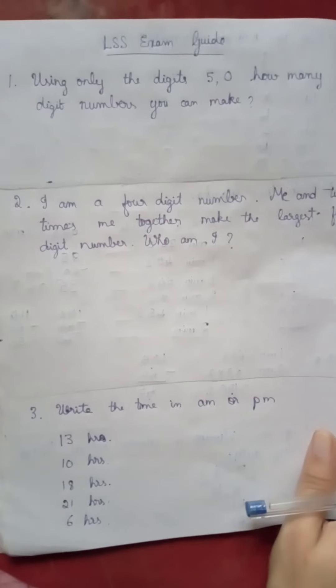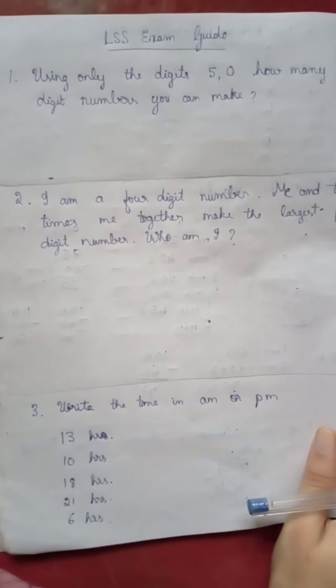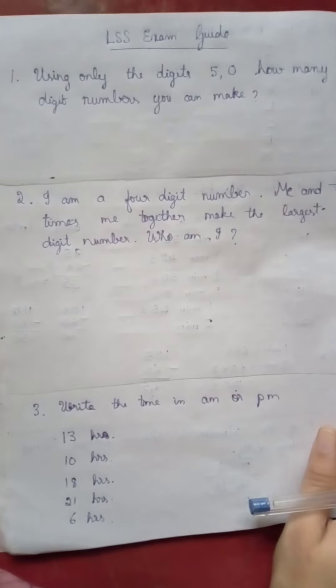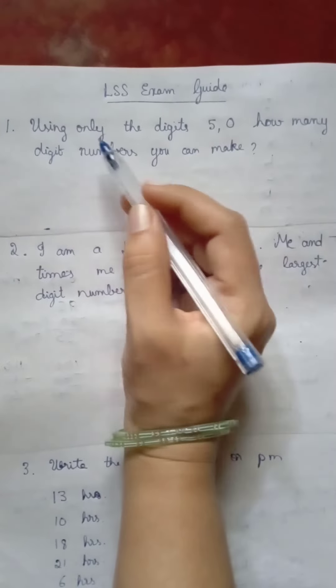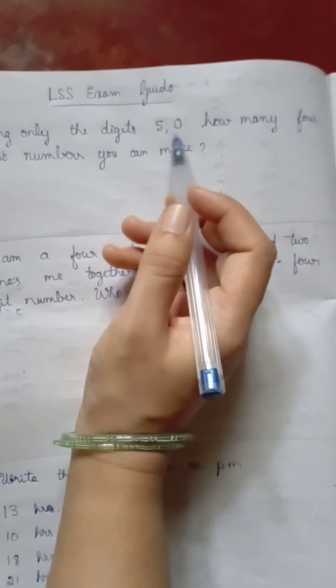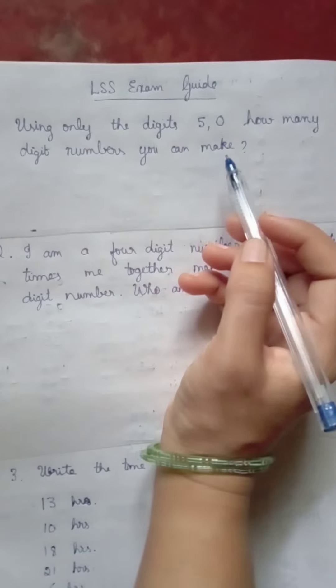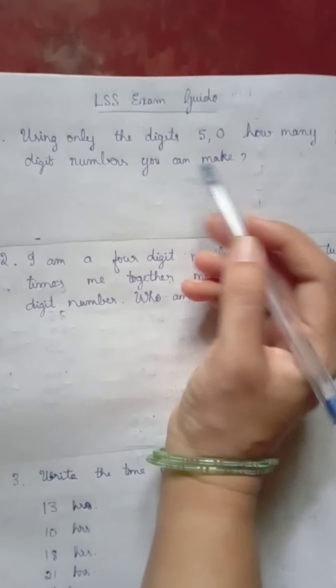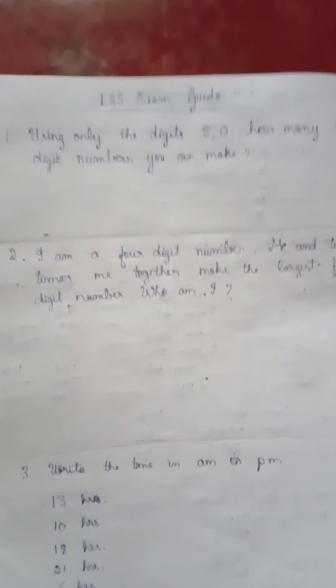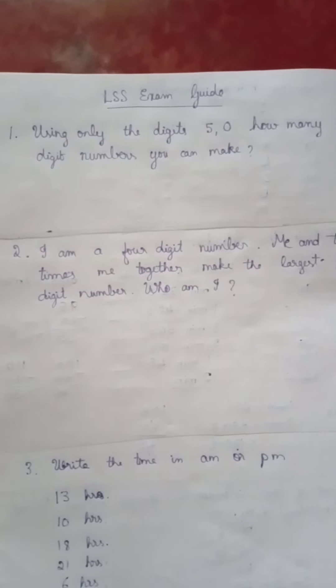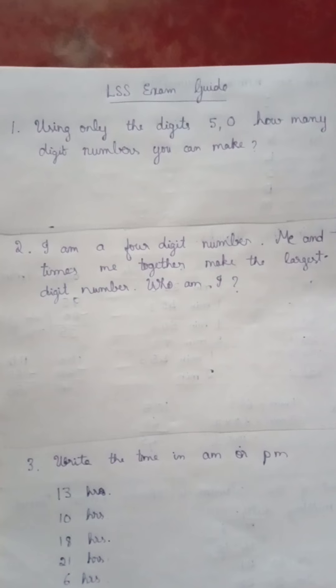So friends, shall we continue preparing for LSS exam? Look at this problem: using only the digits 5 and 0, how many four digit numbers you can make? When you make four digit numbers, you cannot use zero in the thousands place because that place will have no value and you will get only a three digit number.